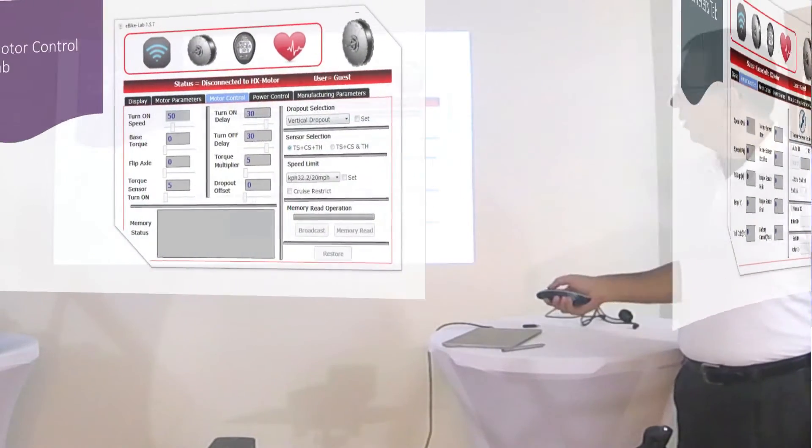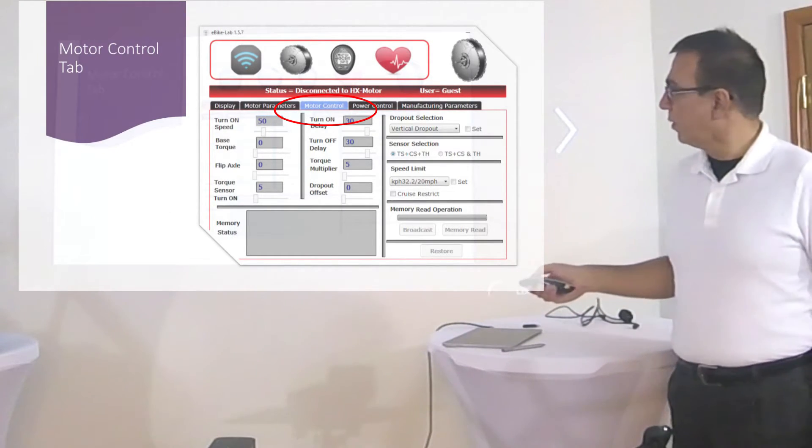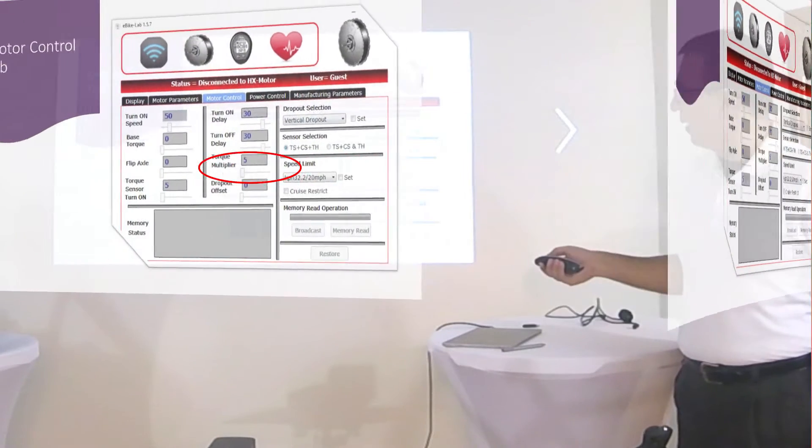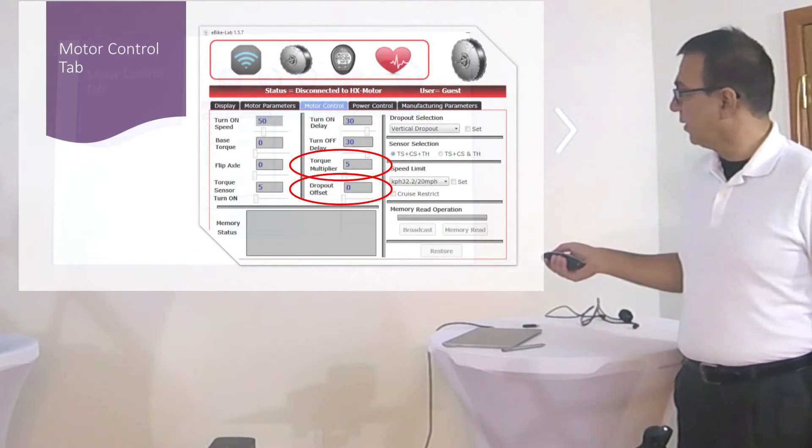If you go to the next one, this is your motor control tab. The motor control tab allows you to access the flip axle command, dropout offset, and torque multiplier.